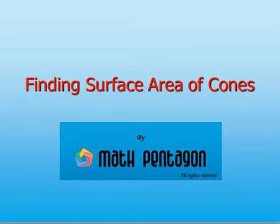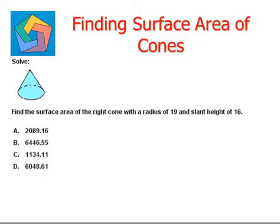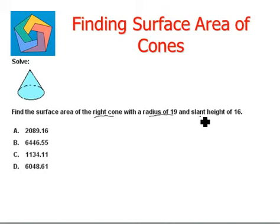Hello and welcome. Our topic for the day is finding surface area of cones. To understand the concept, let's do some questions. The first question says: find the surface area of the right cone with a radius of 19 and a slant height of 16. Before we solve for the surface area, let's look at the formula.